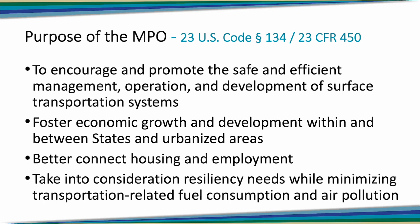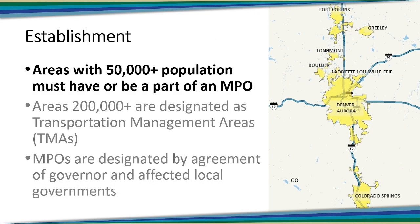How does an MPO come into being? It's a federal requirement. The first federal law that created MPOs, the 1973 Federal Highway Act, said that there would be an MPO for every urbanized area of over 50,000 in population.